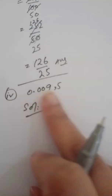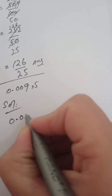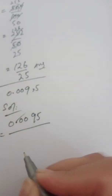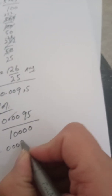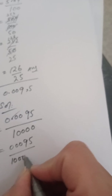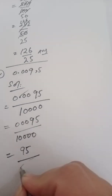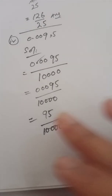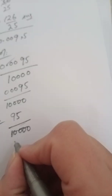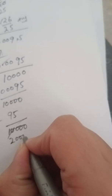Part number four is 0.0095. We remove the decimal point: there are four digits after the point, so we place 1 and four zeros, giving 95 upon 10,000. We cancel the common factor of 5: 95 divided by 5 is 19, and 10,000 divided by 5 is 2,000. The final answer is 19 upon 2000.